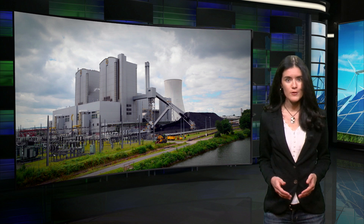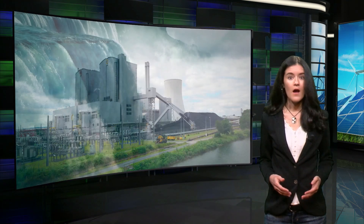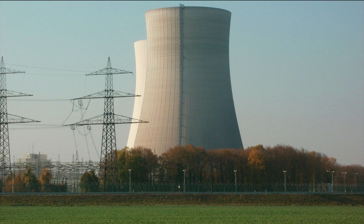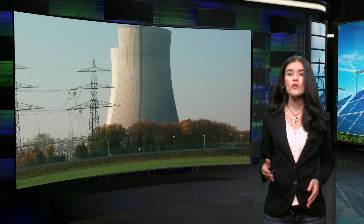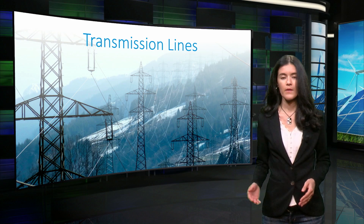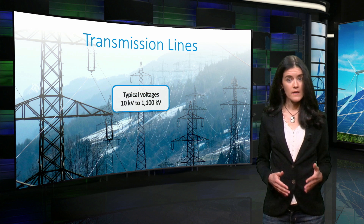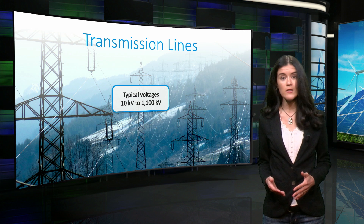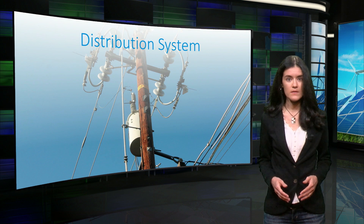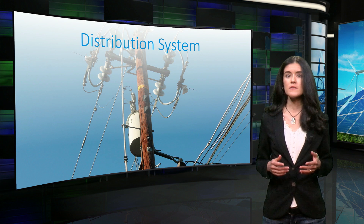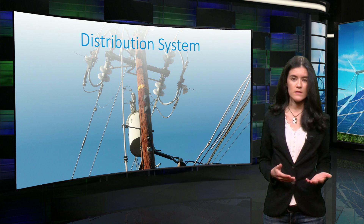Some examples of traditional power plants are thermal, hydro, and nuclear power plants. The transmission system is made of transmission lines that transport the power from the generation system to the distribution system. Typical voltages for the transmission system range from 10 kV to 1100 kV. The distribution system is the network that feeds power to the load. The load represents the power consumption of the system.